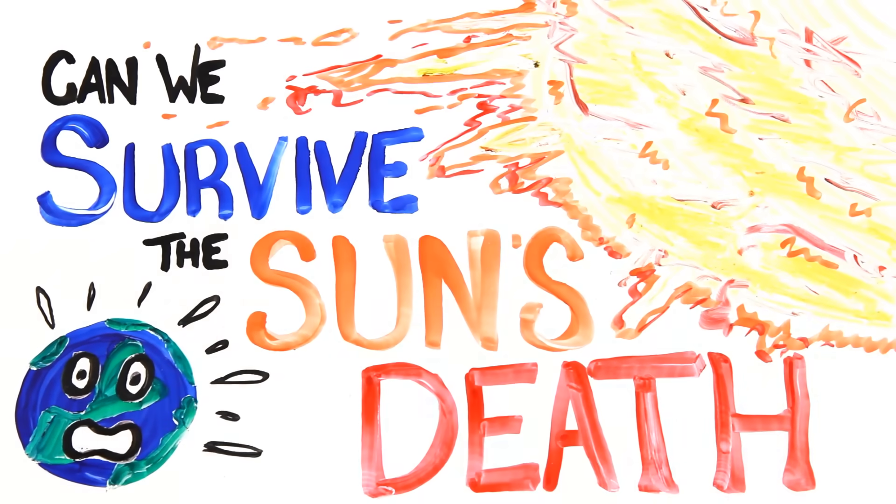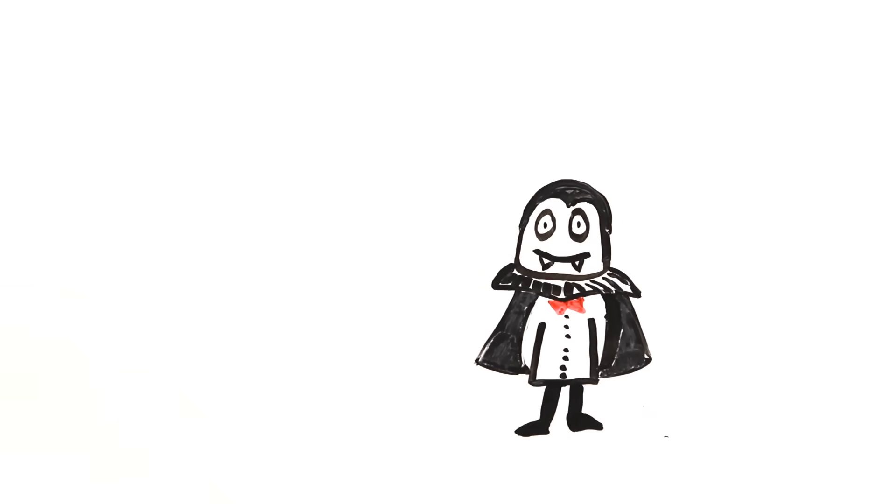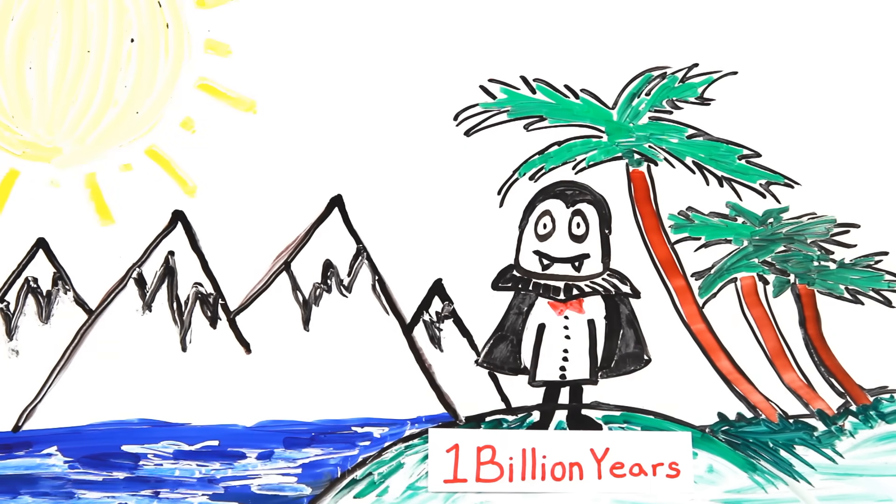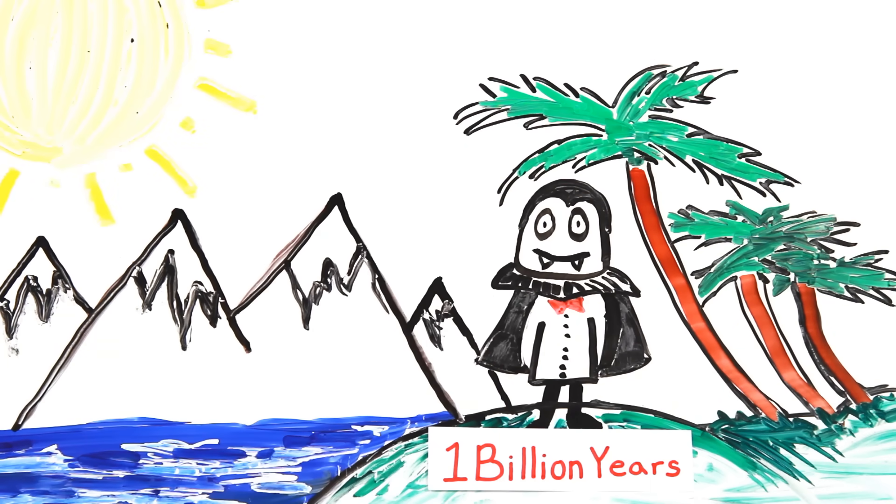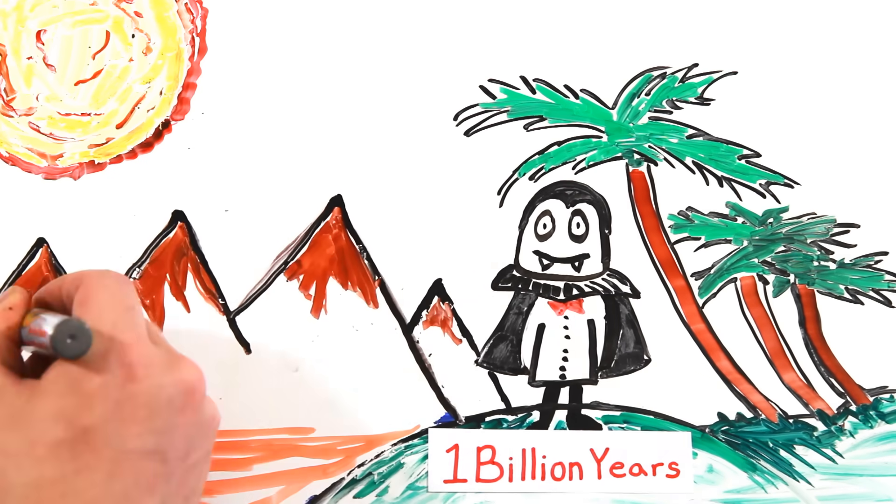Can we save ourselves from the Sun's ultimate death? Sure, none of us will be here, assuming we don't find the secret to everlasting life. But at the billion-year mark, the Sun will have used up the hydrogen fuel in its core, forcing it to burn at its surface. The increased radiation will boil away all of the water on Earth, creating an international desert.